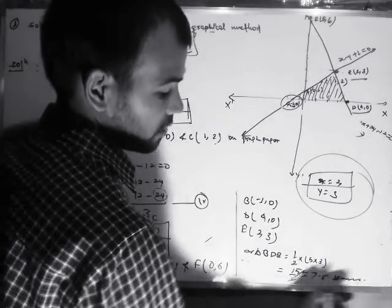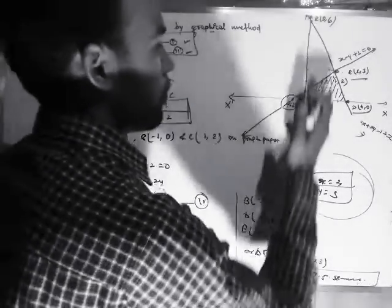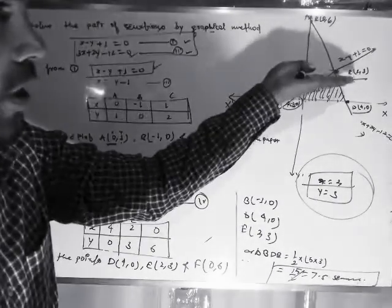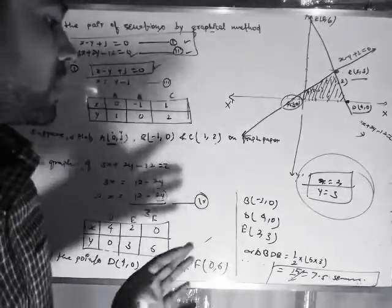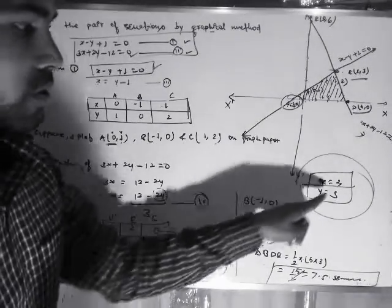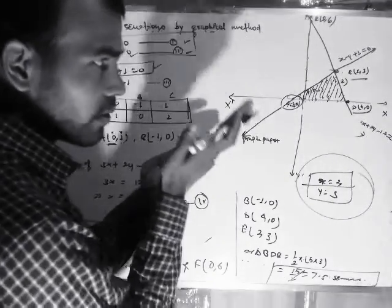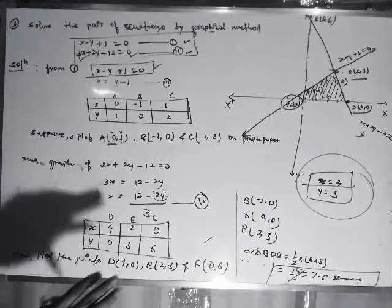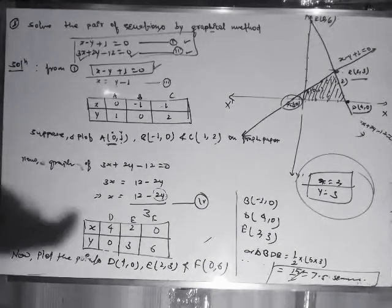Similarly, you can also find the area of the triangle formed by these two lines and the y-axis. Now, to summarize: if we get a single intersection point, that is the unique solution. Similarly, if you draw the graph and the two graph lines overlap each other, then that pair of linear equations has infinitely many solutions. And lastly, if these two graph lines are parallel to each other, then there is no solution at all. Thank you, that's all.